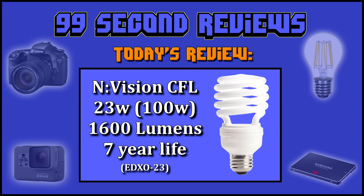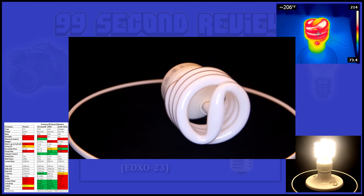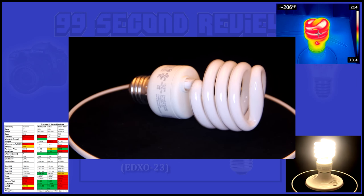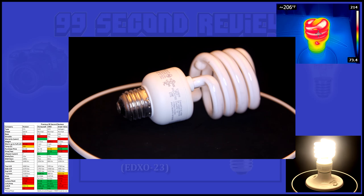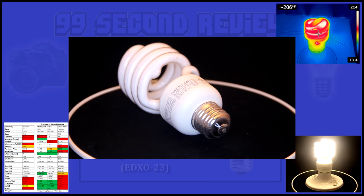Welcome to 99 Second Reviews. Today I'll be reviewing and benchmarking the Envision 23-watt CFL. It promises 1600 lumens and a seven-year life. With CFLs being a mature product, it shows with this bulb. It has a heavy ceramic base and uniform glass.